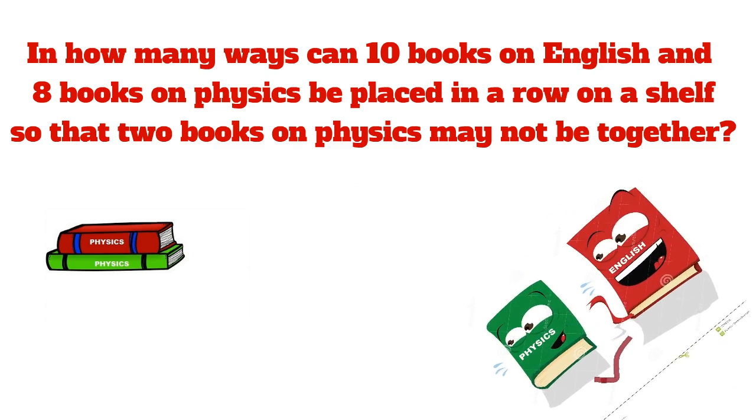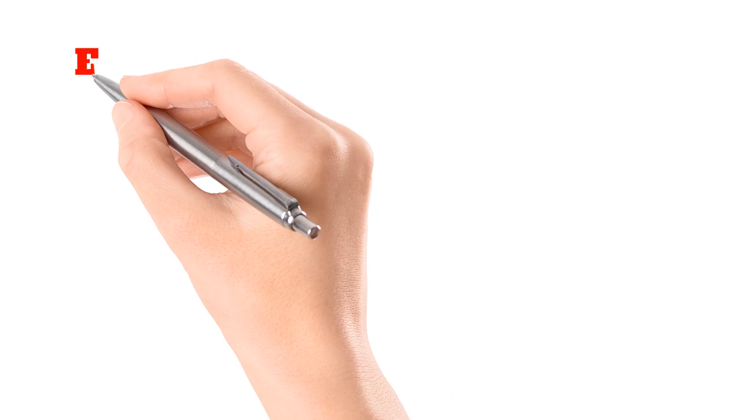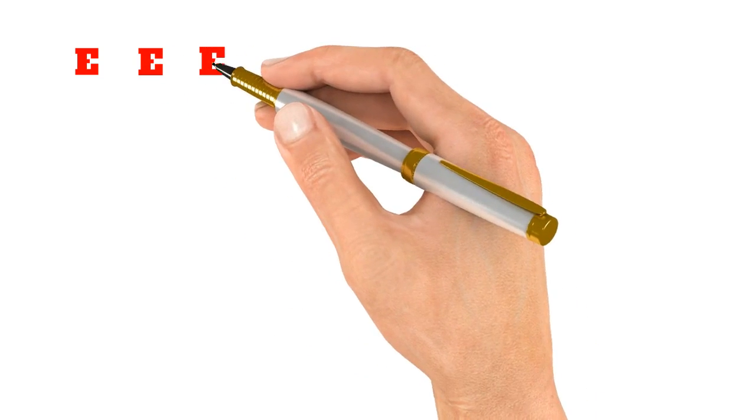How can you do that now? Now it is given as linear, right? So what you can do is place all the English books first. All the 10 books must be placed. So in between these 10 books you can keep physics book.